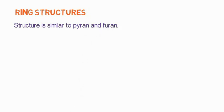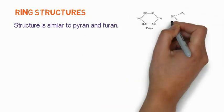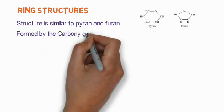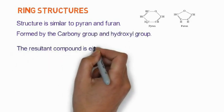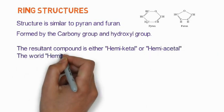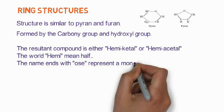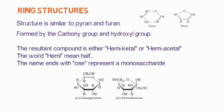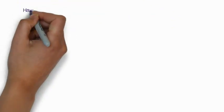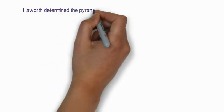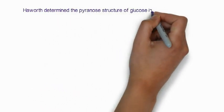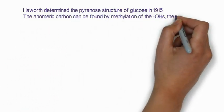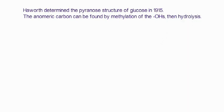The second type of structure is the ring structure. The ring structure is similar to pyran and furan — furan is a five-membered ring and pyran is a six-membered ring. They are formed by reaction between the carbonyl group and a hydroxyl group. The resultant compound is either a hemiketal or a hemiacetal. The names of sugars in ring form end with '-ose.' Haworth determined the pyran structure of glucose in 1915, using methylation of the hydroxyl groups followed by hydrolysis.